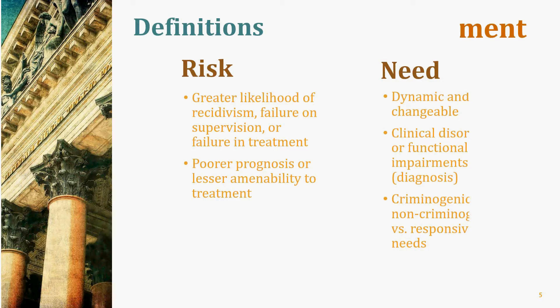There is an important distinction between clinical and actuarial risk assessment. One way to measure risk is by the magnitude of harm — drug possession is less serious than theft, which is less serious than child abuse. Another way, which is actually more accurate, is the likelihood that the harm will occur. Drug possession would actually be higher risk than child abuse because it is a far more common crime, and people arrested for drug possession have higher recidivism rates.